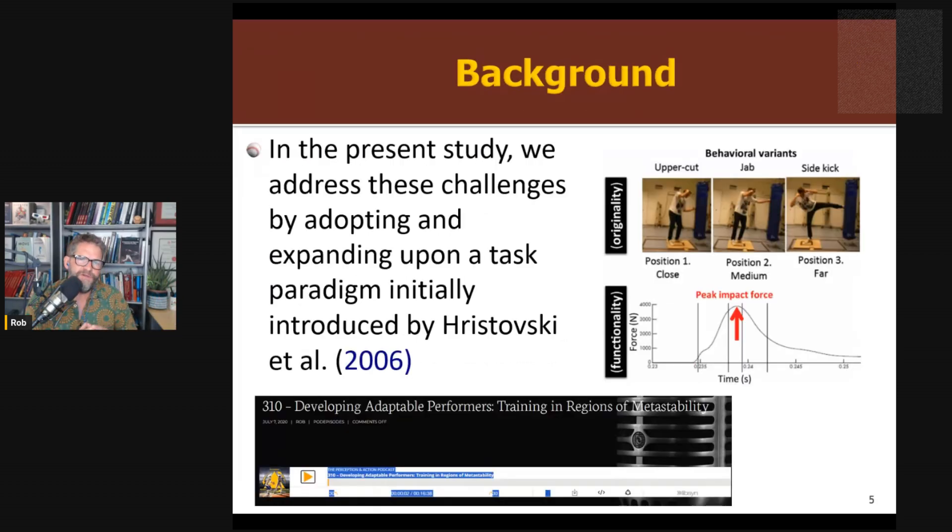What they're going to use is a task that I discussed in episode 310 and in my second book when looking at the idea of metastability, and that's this kickboxing task. In Hristovski and colleagues' work, what we do is look at kickboxing when you manipulate the constraint of distance. The idea here is that as distance changes, different movement solutions open up. When you're really close, you can do an uppercut. When you're further out, you can do a jab. When you're really far away, you can do a sidekick. You can't really do a sidekick when you're super close.